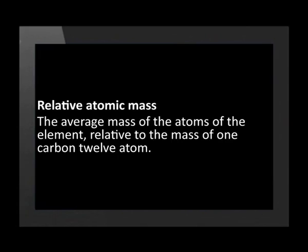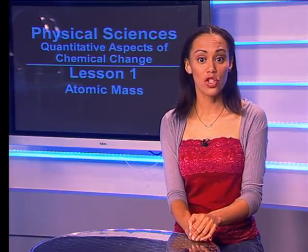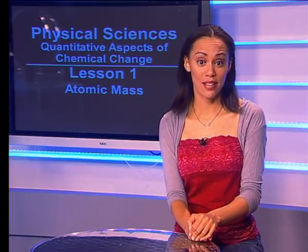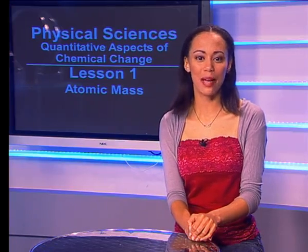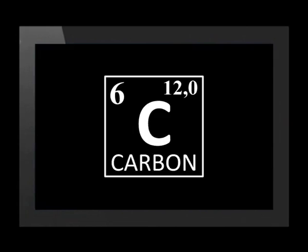The relative atomic mass of an element is the average mass of the atoms of the element relative to the mass of one carbon-12 atom, which is given a mass of 12. From the periodic table, we know that the mass of one carbon atom is 12 atomic mass units. Because relative atomic mass is compared to the mass of a carbon atom, relative atomic mass is without a unit. On the data sheet received in exams, the approximate relative atomic mass is usually given below the symbol for each element. In some periodic tables, the relative atomic mass is at the top of the block.